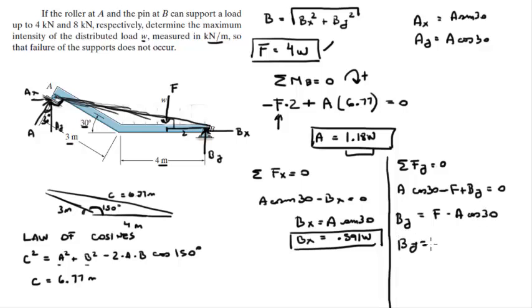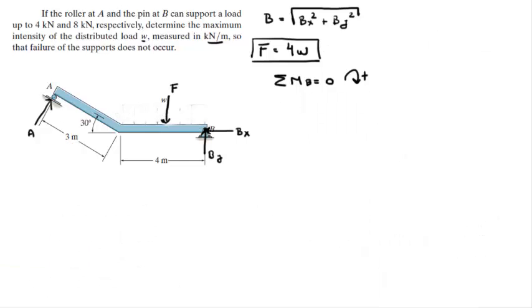So BY is equal to F minus A cosine of 30. So BY is equal to 2.98 W. You got to plug in for F you got to plug in 4W and for A you got to plug in 1.18 W and just solve. And you get BY in terms of the weight. So let me turn the page and leave that there.